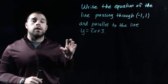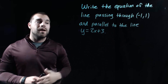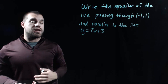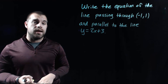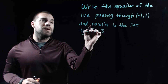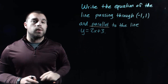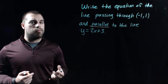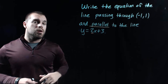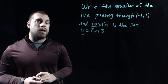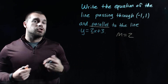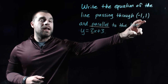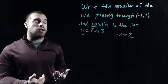In this example, we're going to write out the equation of the line going through the point negative 1, 1, and that's parallel to y equals 2x plus 3. We're writing a y equals mx plus b equation, so we need the slope and the y-intercept. Since we want our line to be parallel, remember parallel lines have exactly the same slope. This line has a slope of 2, so our new line also has a slope of 2.